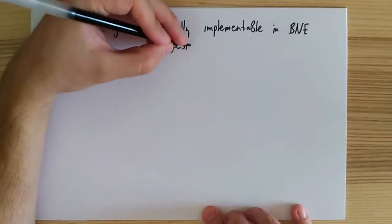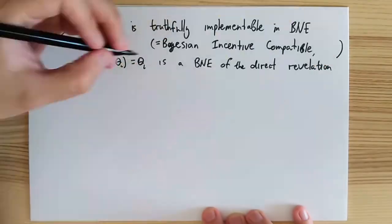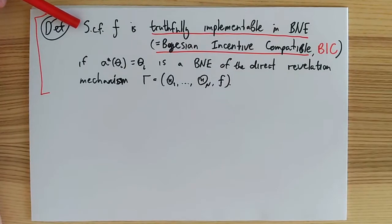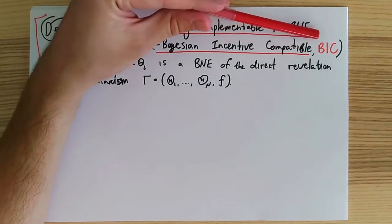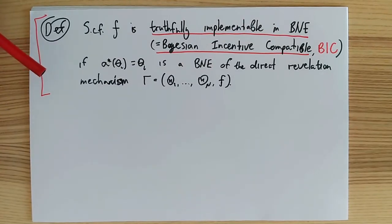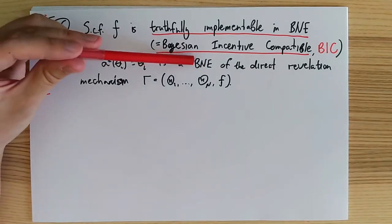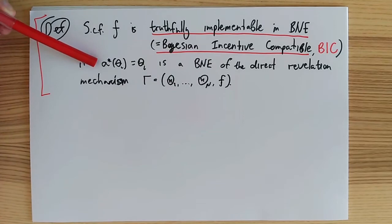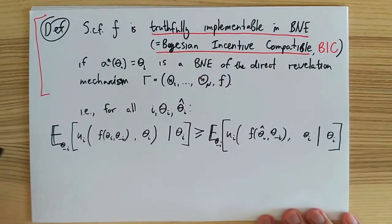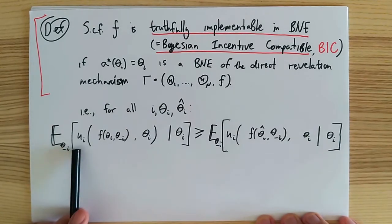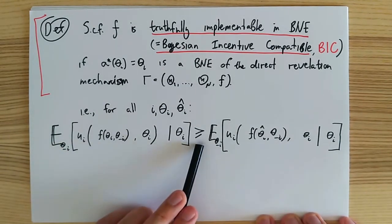Now that we have introduced our new implementation concept, we can also restate the revelation principle for Bayesian mechanisms. The first definition on this path is that of truthful implementation. We will call a given social choice function truthfully implementable in Bayes Nash equilibrium, or, as we will call it more often, Bayesian incentive compatible, if it is implemented in Bayes Nash equilibrium by a direct revelation mechanism, meaning that truthful reporting is a Bayes Nash equilibrium of the direct revelation mechanism for this social choice function. In other words, social choice function f is Bayesian incentive compatible if for all players and their types, the expected utility from reporting one's type truthfully to the mechanism is at least as large as from any possible misreport.